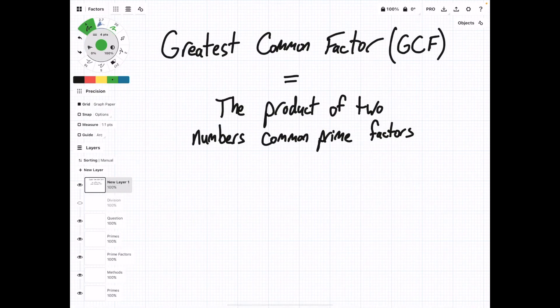In the next video, we'll look at finding the greatest common factor, or GCF, between two numbers. And you'll be able to use what you learned here to do that. If you look at the definition of what the GCF is, it is the product of two numbers common prime factors.